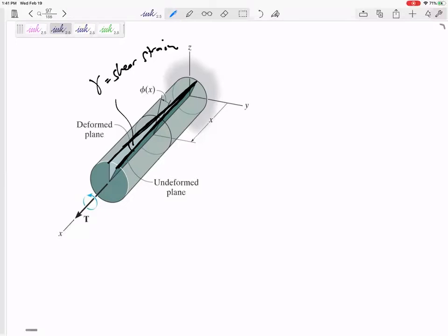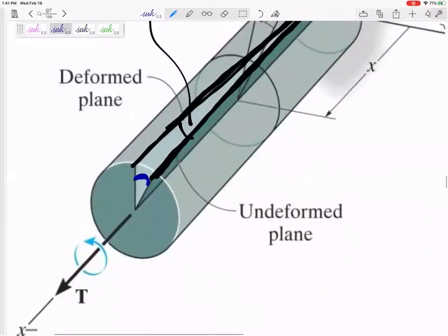But now, this angle right here, did y'all see what I just drew? That blue, this angle right here is a different angle than gamma. It's a different angle than gamma, and this angle we'll call phi. That angle, phi, and that is the angle of twist.